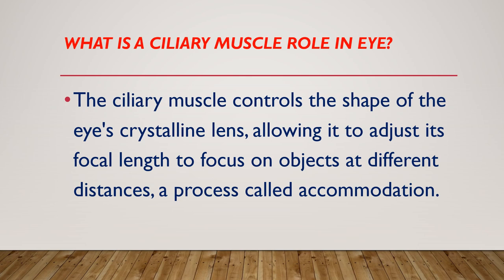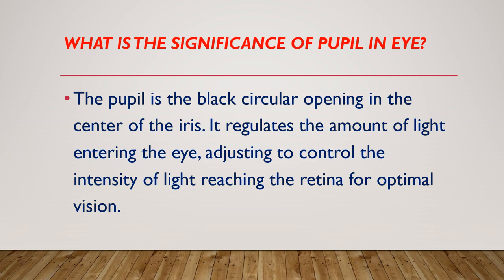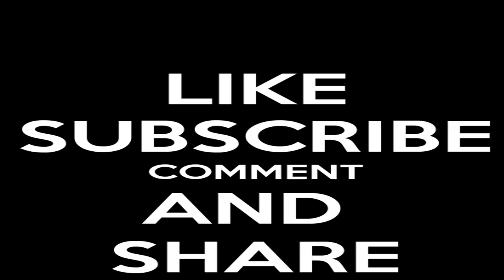What is the significance of the pupil in the eye? The pupil is the black circular opening in the center of the iris. It regulates the amount of light entering the eye, adjusting to control the intensity of light reaching the retina for optimal vision.